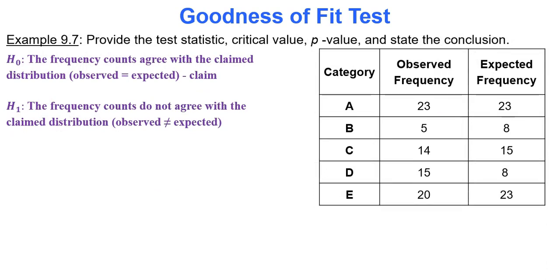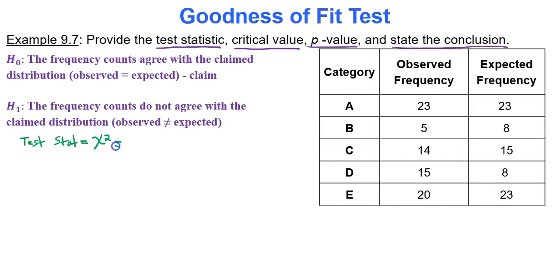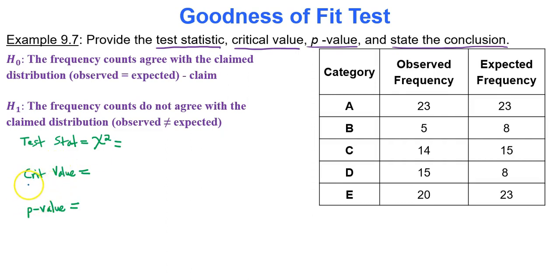Now we'll find the test statistic, critical value, p-value, and state the conclusion. The test statistic is represented by chi-squared. The critical value is found from a table, and the test statistic and p-value are found from Google Sheets. The critical value requires the degrees of freedom, which is always the number of categories k minus one. With five categories, that gives us four degrees of freedom.